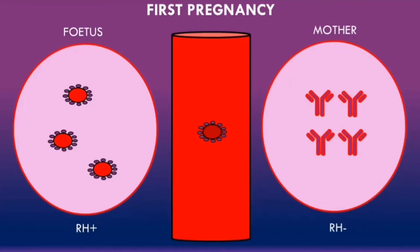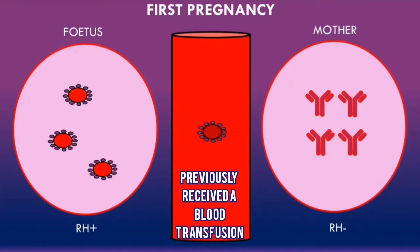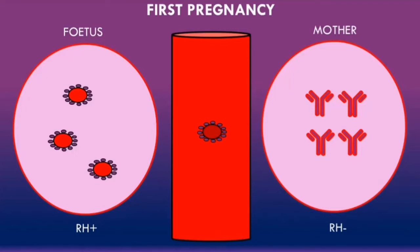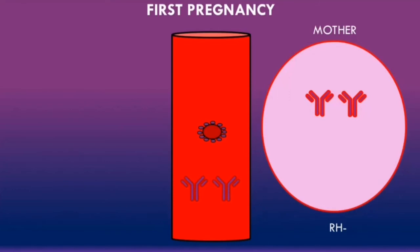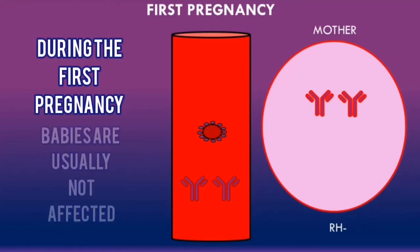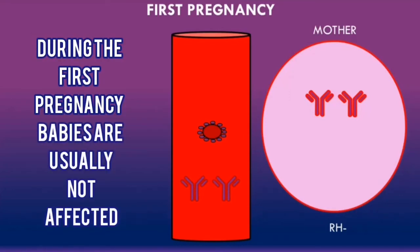Another potential sensitizing event could be if the mother previously received a blood transfusion containing the rhesus D antigens, leading her to produce anti-D antibodies. During the first pregnancy, even though maternal anti-D antibodies will enter the circulation, the fetus will usually not be affected as it will have already been delivered during labor. Hence, during the first pregnancy, babies are usually not affected with hemolytic disease of the newborn.